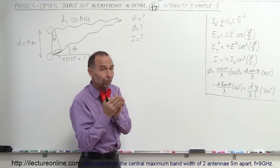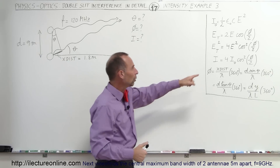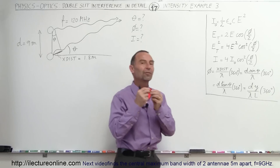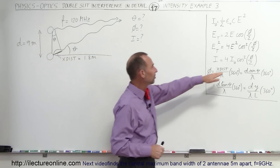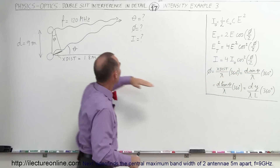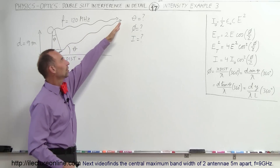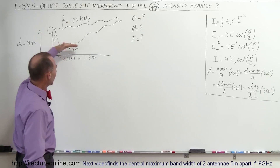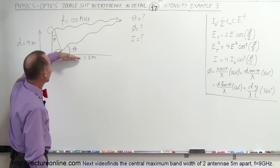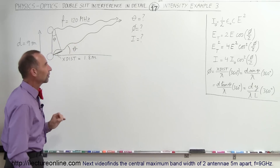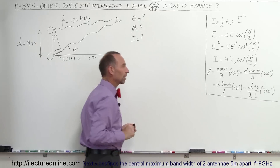The maximum intensity of two waves coming together from a double-slit problem — also applicable to two antennas — is four times the intensity of a single wave times the cosine squared of the phase angle divided by two. So if the phase angle is zero degrees, the intensity will be four times the intensity of a single wave. The angle theta is the directional angle from where we consider the point of interest, with zero angle being directly across the two antennas. There is a relationship between theta and the phase angle phi.